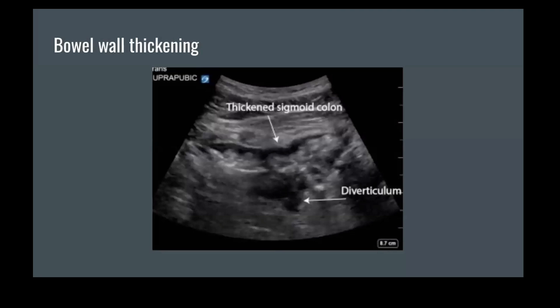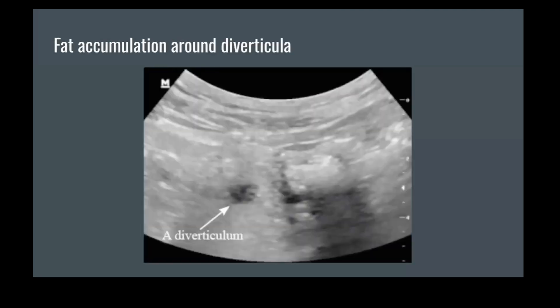Here we have an image of a thickened colon at the top. At the bottom of the image, we have an anechoic pouch that indicates a diverticulum. Next, we have an image of a diverticulum and hyperechoic fat surrounding it. This is indicative of inflammation.